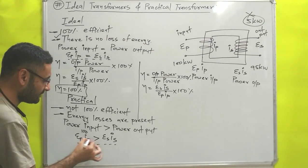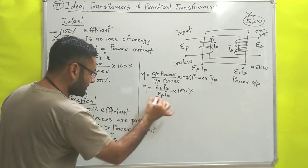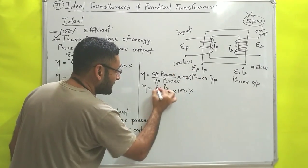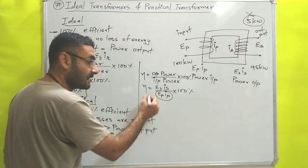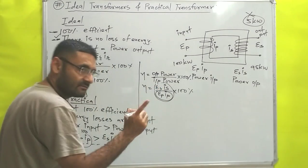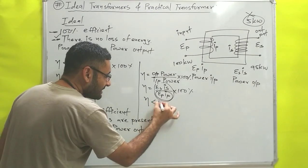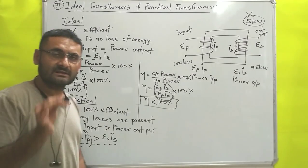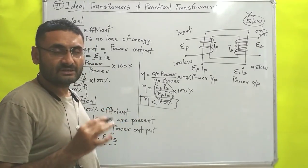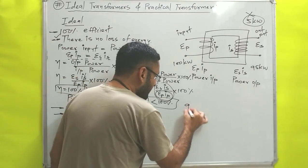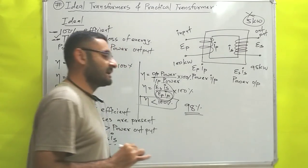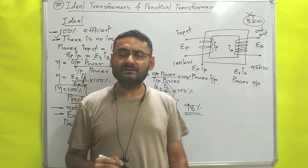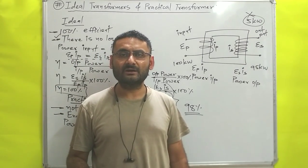For the case of a practical transformer Ep·Ip is greater than Es·Is. For example, if input is 100 and output is 95, that ratio is 0.95, so the answer is less than 1, meaning efficiency is less than 100%. Efficiency of practical transformers is always less than 100%. Nowadays, whatever practical transformers are available, they have up to 98% or 99% efficiency. So this is all about the story of ideal and practical transformers. Till then, read hard, work hard — thank you very much.